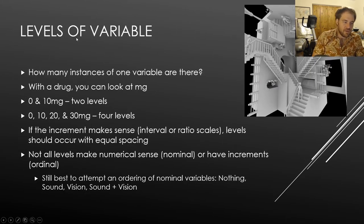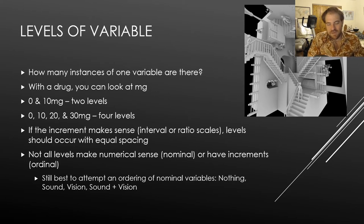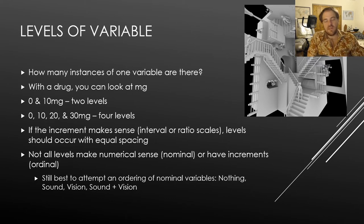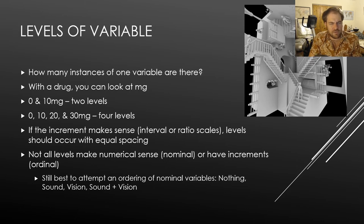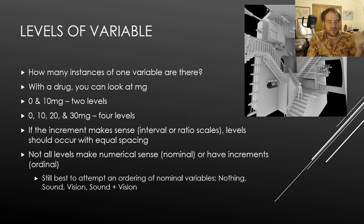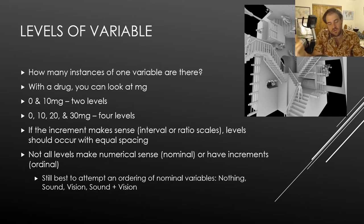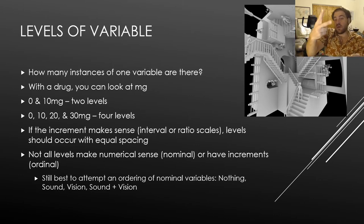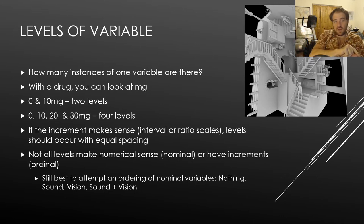When we talk about levels of a variable, that just means how many different instances of one variable there are. For example, a cholesterol-reducing drug like Lipitor: if we test zero milligrams and ten milligrams, that's one variable — Lipitor — with two levels.